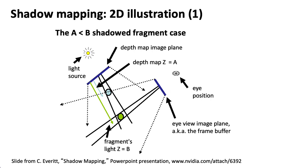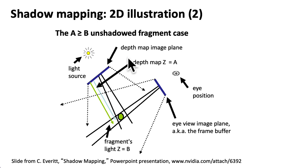Now let's compare that to the case where there isn't anything between the light and the object we're drawing. When we first draw the scene from the point of view of the light and store the depth information into the shadow map, we would have a bigger number in that shadow map indicating that distance. Then when we draw the scene from the point of view of the camera and compute the distance to that green point, we see that the distance is the same as what's stored in the buffer. We conclude that nothing is blocking the light and go ahead with the lighting calculation.